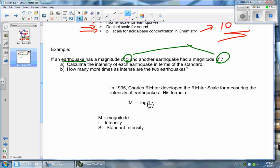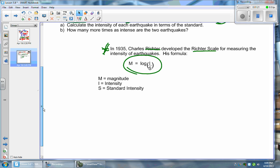The neat thing here is that in 1935, a guy by the name of Charles Richter developed something called the Richter scale for measuring the intensity of earthquakes. And it looks very much like this, and you can pretty much figure out what each one of these stand for.